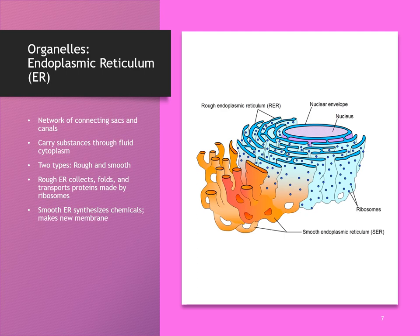If the proteins being manufactured are going to stay inside the cell, that's typically the job of the smooth ER, which is responsible for synthesizing chemicals that help to maintain the cell membrane. This process makes sense when we think about the endoplasmic reticulum being closely adjacent to the nucleus, because the process of making new proteins begins in the nucleus with DNA. DNA will unwind to allow RNA to come in and make a copy of that DNA.